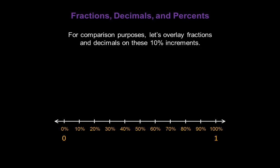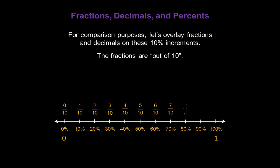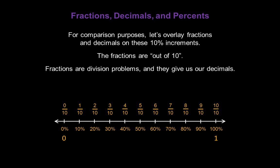For comparison purposes, let's overlay fractions and decimals on these ten percent increments. The fractions will be out of ten, so starting with zero we have zero out of ten. Ten percent is one out of ten. Twenty percent is two out of ten, and so forth until we get to ten out of ten. Now fractions are division problems, so they give us our decimal equivalents. Zero divided by ten is zero. One divided by ten is zero point one. Two divided by ten is zero point two, and so forth until ten divided by ten, which is one.